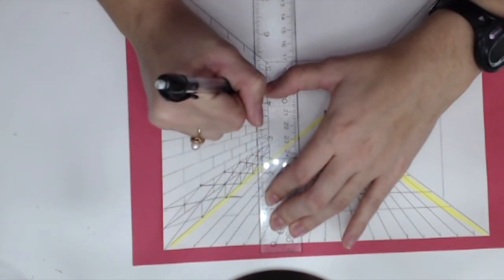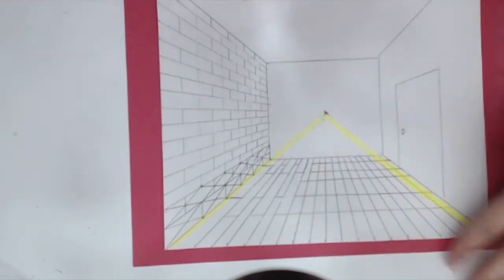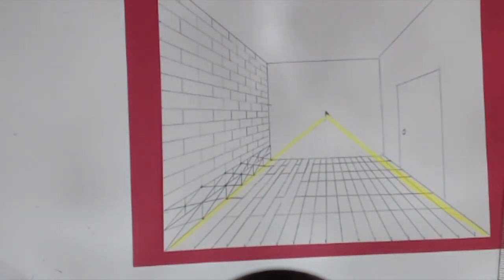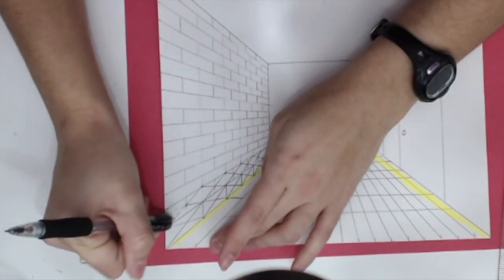Once you've made your way all the way to the back wall, you have got your bricks. Now what we can do, because we still have these extra little subdivision lines, you can go ahead and erase those up.